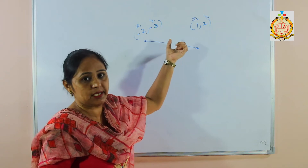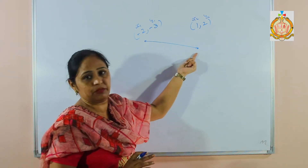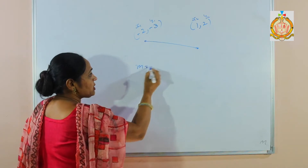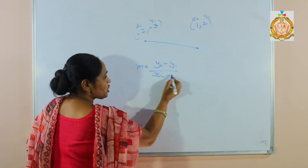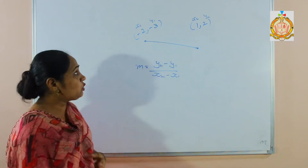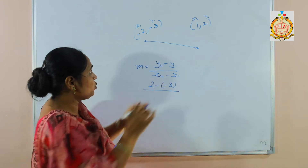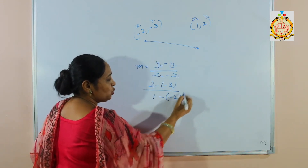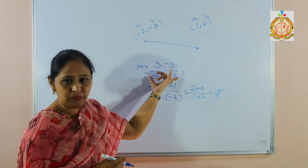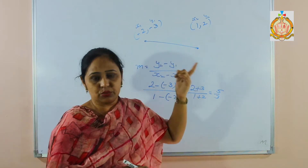Students, I am repeating: if an angle is given, just find tan of the angle — that becomes the slope. But if two points are given, use the formula: m equals y2 minus y1 upon x2 minus x1. Putting the values: y2 is 2, y1 is minus 3, x2 is 1, x1 is minus 2. That gives us 2 plus 3 upon 1 plus 2, which becomes 5 upon 3. So the slope is 5/3.